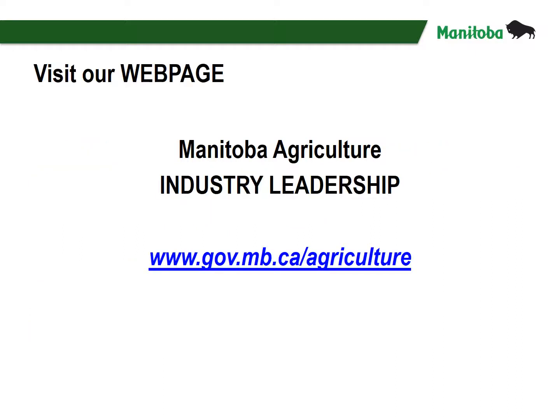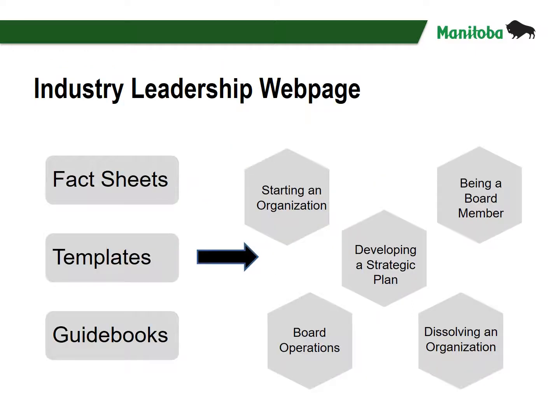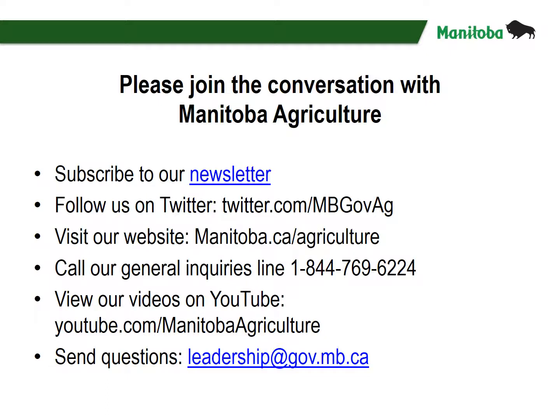Make time to visit our Manitoba Agriculture Industry Leadership webpage at www.gov.mb.ca. The website contains a wealth of information related to starting an organization, developing a strategic plan, being a board member, board operations, and dissolving an organization. The resources section also contains a number of tools and links that you will find helpful. Please join the conversation with Manitoba Agriculture — subscribe to our newsletter, follow us on Twitter, visit our website, call our general inquiries line, view our videos on YouTube, or send questions to leadership at www.gov.mb.ca.